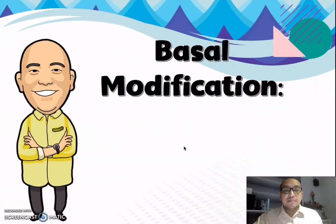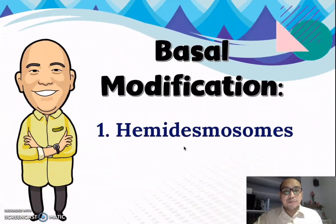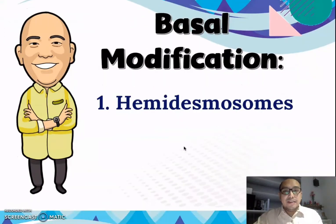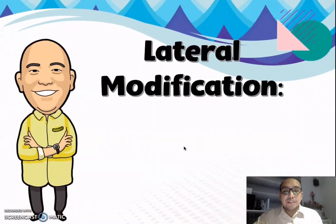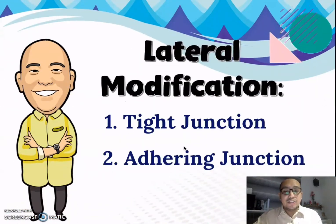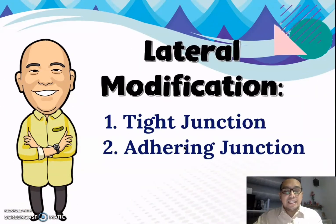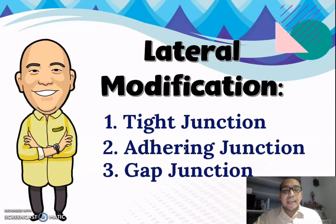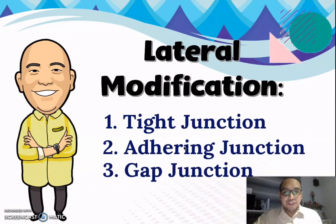For basal modification, hemidesmosomes are very good examples. For lateral modification, there are three types: the tight junction, the adhering junction, and the gap junction.